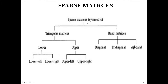Sparse matrices are basically divided into two types: triangular and band. Triangular is again divided into lower and upper. Lower is divided into lower left and lower right. Upper is again divided into upper left and upper right. Band matrices are divided into three: diagonal, tridiagonal, and alpha-beta.